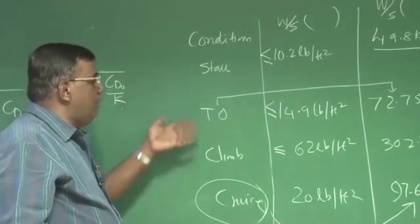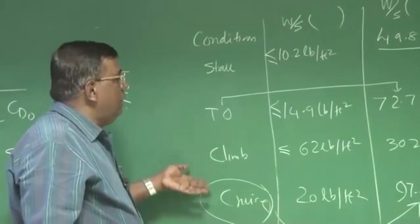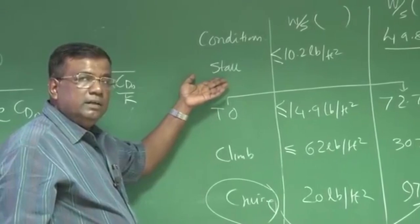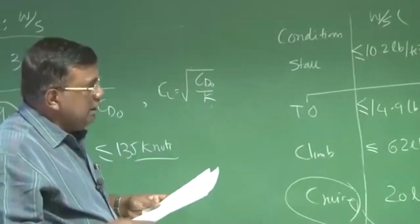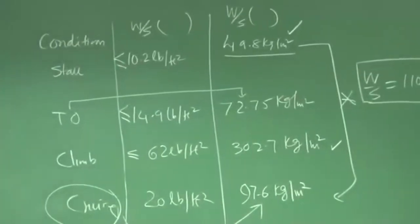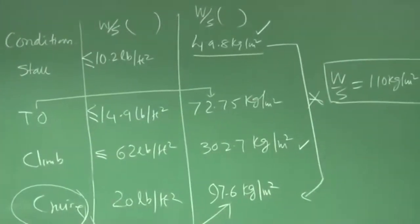If it is a plane for maximum range and all, then why should I give so much weightage to this? So that is one of the debate will go on. And let us say W by S is 110 kg per meter square. We have decided. Then what we have to do?